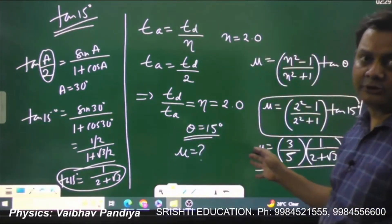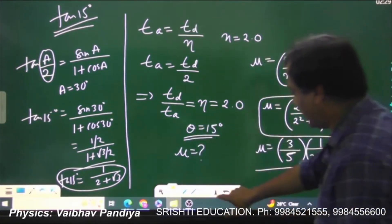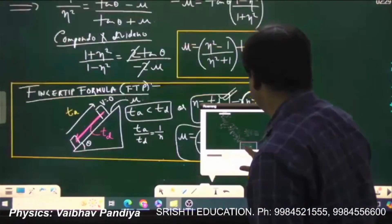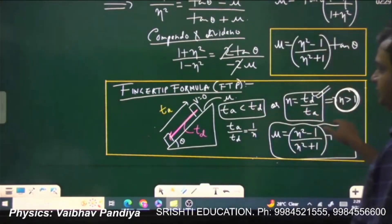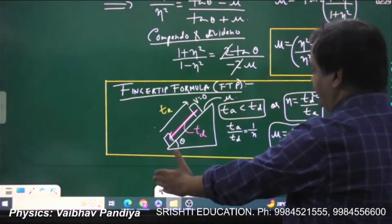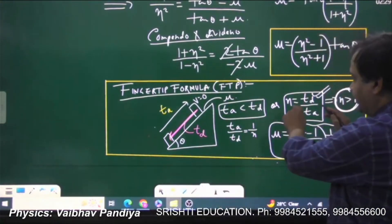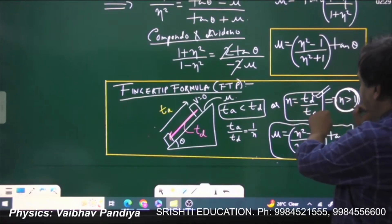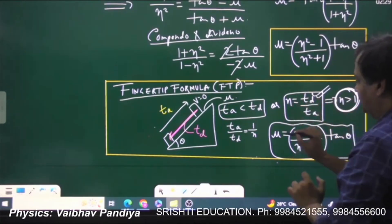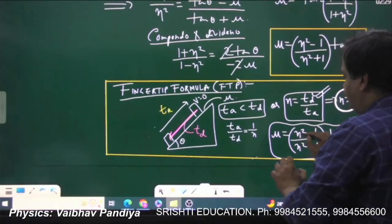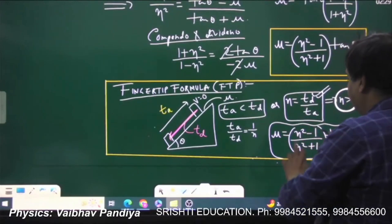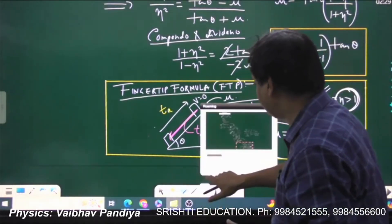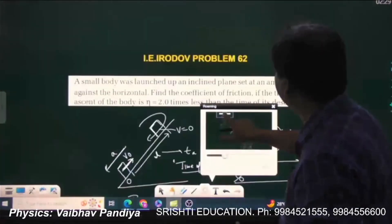So the final answer for μ is (3/5) × 1/(2 + √3). Remember this FTP for MCQs: take η as the ratio of time of descent to time of ascent (always greater than 1), and the coefficient of friction is μ = (η² − 1)/(η² + 1) × tanθ. That completes problem number 62.